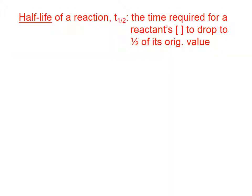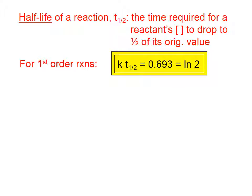Let's talk about half-life. It's symbolized t₁/₂ and it is the time required for a reactant's concentration to drop to one-half of its original value. For first-order reactions, if you take the rate constant multiplied by the half-life, you will get 0.693, which is actually the natural log of 2.